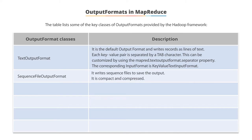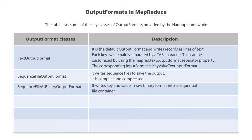Sequence file output format writes sequence files to save on output space. This represents a very compact and compressed version of normal data blocks. Sequence file as binary output format is responsible for writing key value pairs that are in raw binary format into a sequential file container.